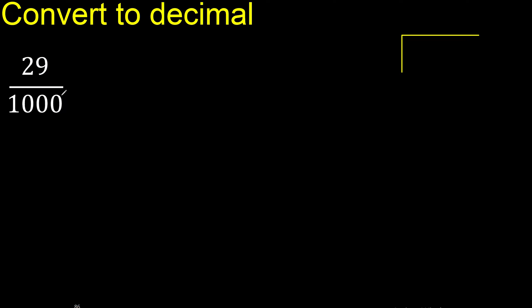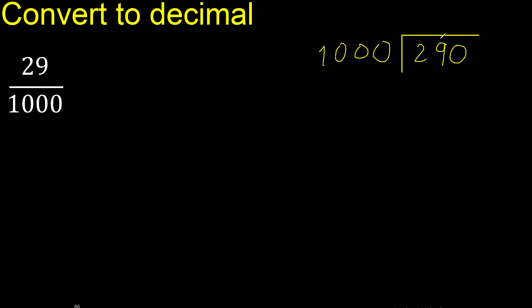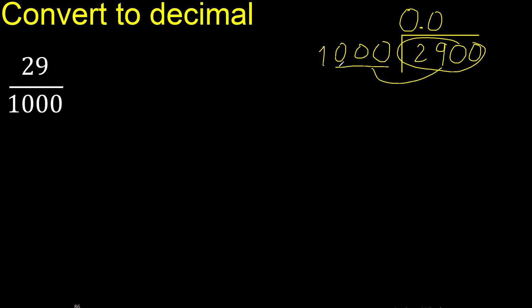29 divided by 1000. 29 is less than 1000, therefore complete with 0. Always complete with 0. Here 0 point is less, therefore 0 point is here — it is not less.